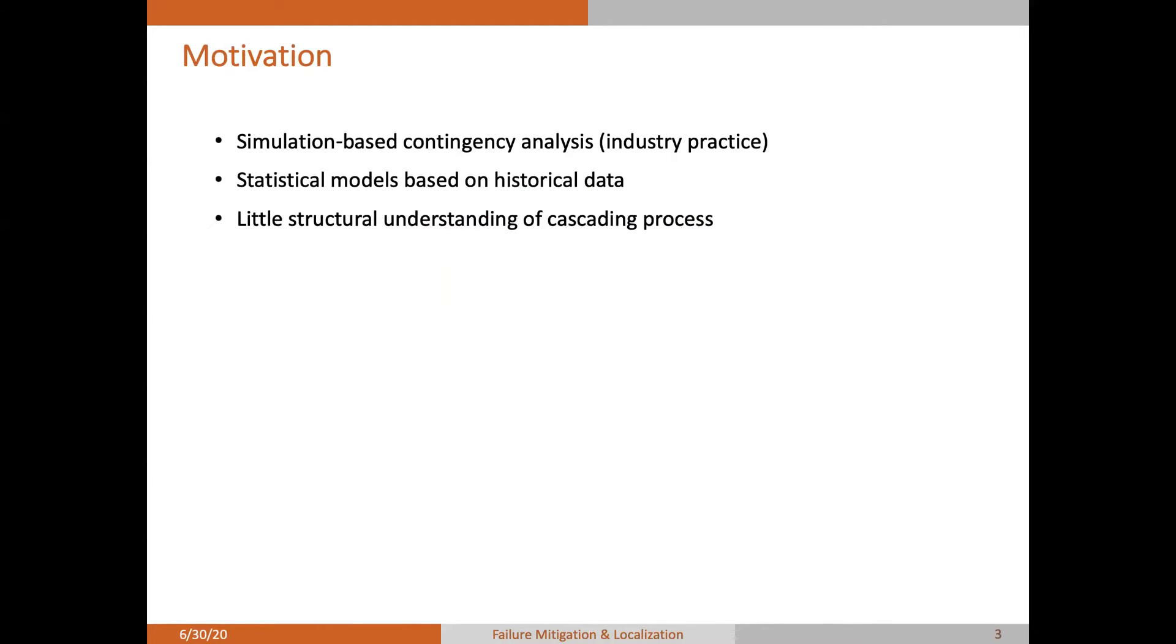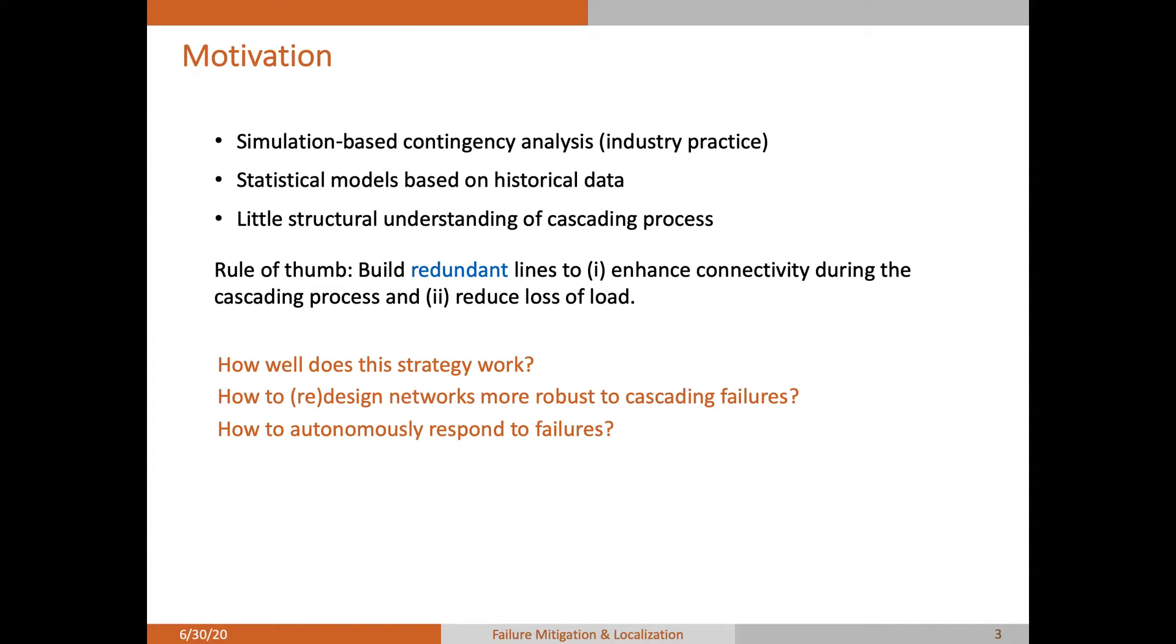The current industry practice relies on simulation-based contingency analysis, which is usually constrained by the computational power. There's also some literature using statistical models based on historical data, but the structural analysis of the cascading failure process is less studied. Conventionally, redundant lines are believed to improve the system robustness since it enhances connectivity during the cascading process and provide alternative paths for the power to flow. However, how well does this strategy work? Is the redundancy really helpful? Can we design a new controller that can autonomously respond to failures or disturbances?